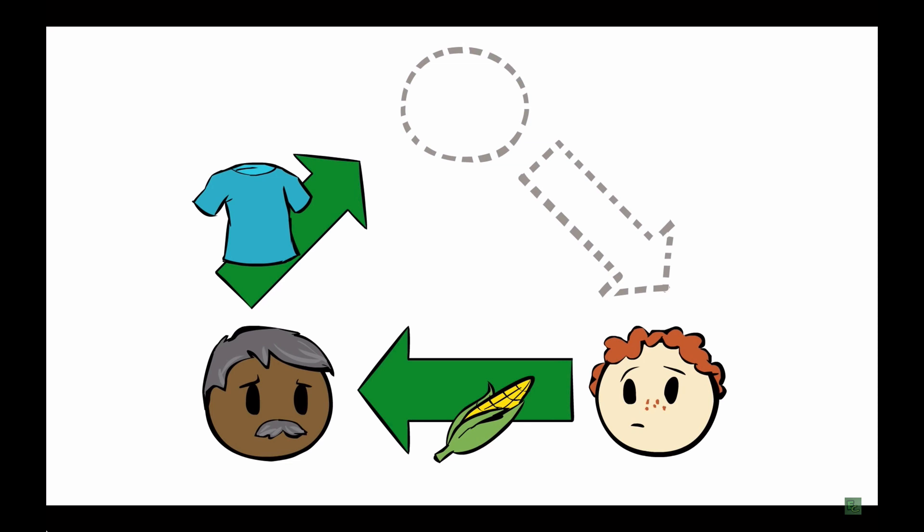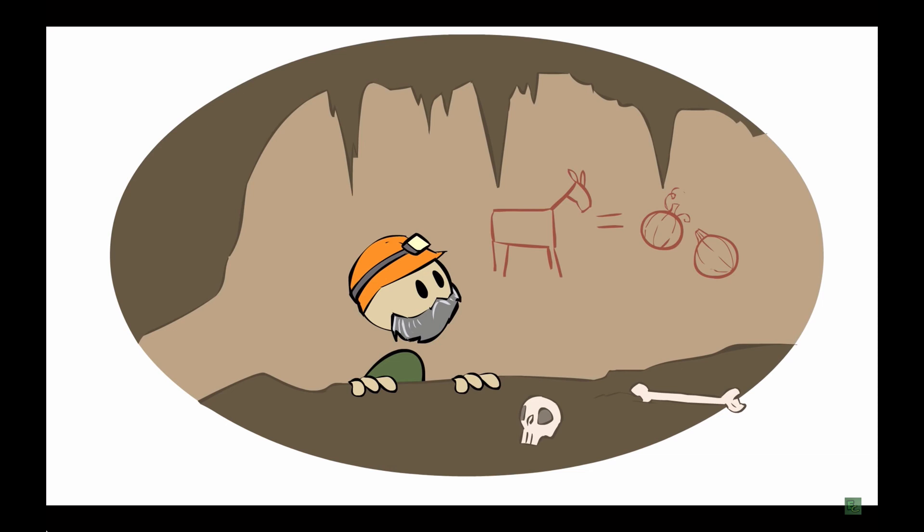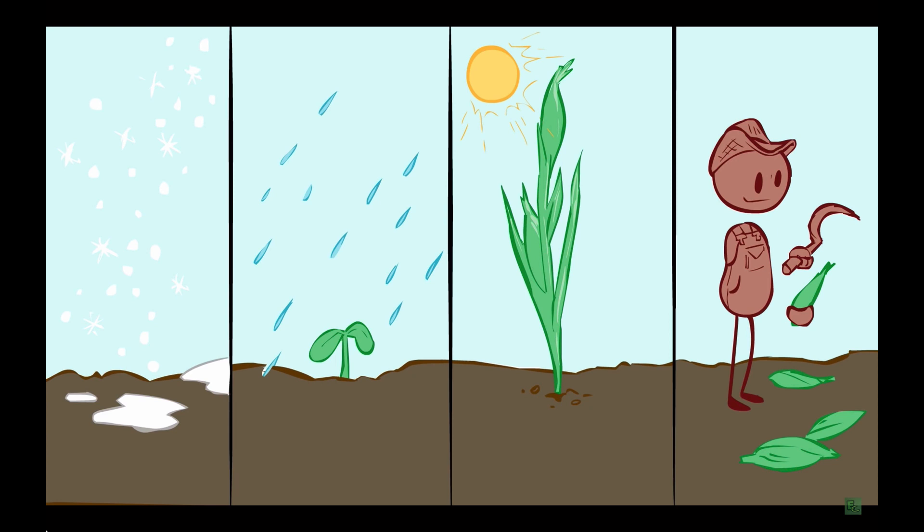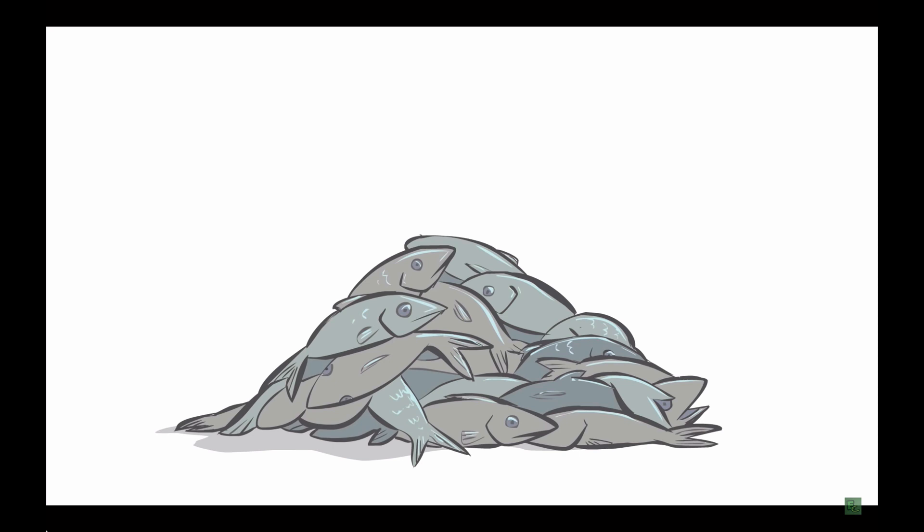And this problem runs even deeper than we sometimes think about when you consider the lack of refrigeration and transportation. Imagine I'm a fisherman, and you're a farmer, and let's say that we want to trade. Well, there's this problem. Your harvest only comes in once a year. I can't trade you for a harvest you don't have yet, and all of those extra fish I caught today are gonna be pretty rotten by the time your harvest comes in.